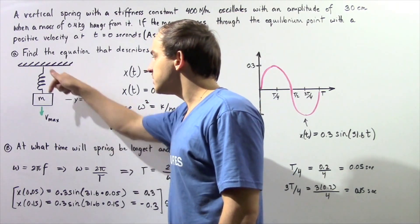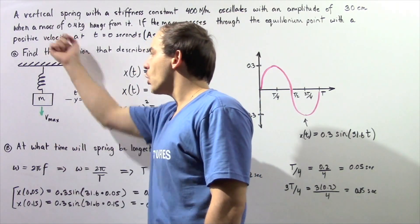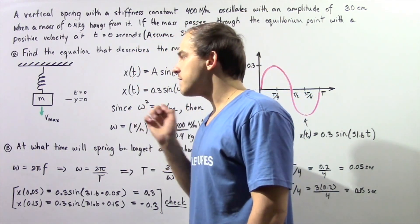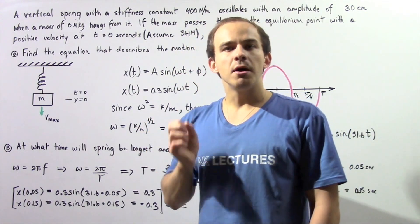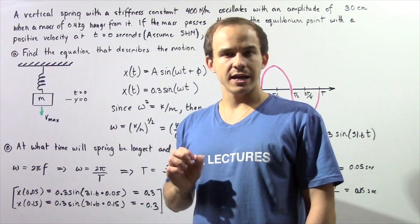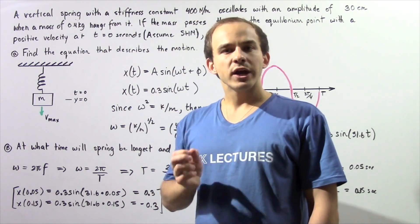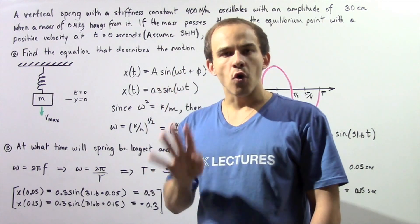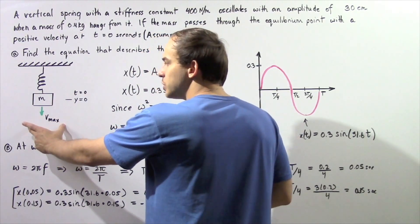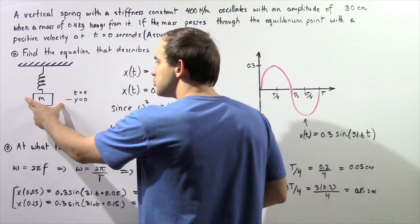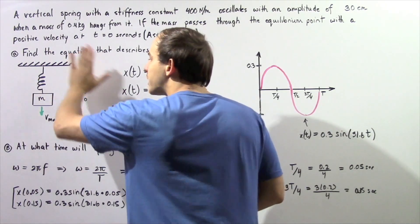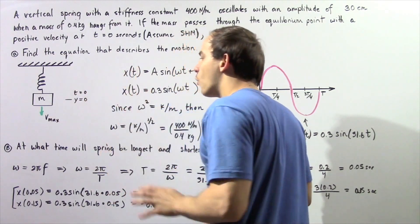Our displacement going down is positive and going up is negative. Recall that the period of our oscillation is the total number of seconds it takes our object to complete one full cycle. We can break down the period into four different sections: going from the equilibrium to the positive amplitude, then back to equilibrium, then going to the negative amplitude, and finally returning back to equilibrium.